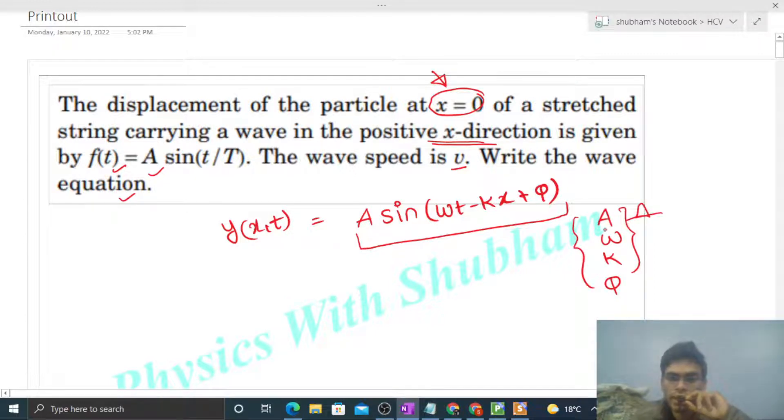If we know these values, then we can easily write the equation. Now what is given? The equation at x equals zero is given. So if I put x equals zero here, what equation will you get? A sin(ωt + φ).